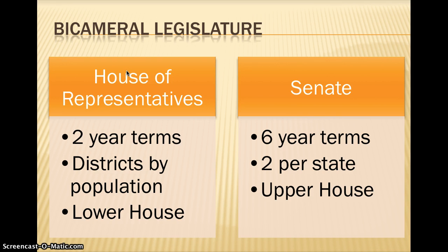The House of Representatives would really represent the people, so they would be elected to two-year terms and elected from individual districts divided by population. The Senate would be elected for six-year terms and wouldn't be quite as subject to the ebb and flow of politics the way the House would, since House members have to run every two years. There would be two senators per state, and this is also called the upper house of Congress since it represents the states rather than the people.